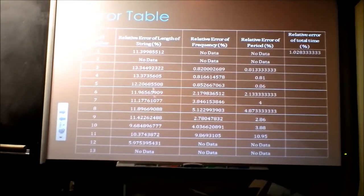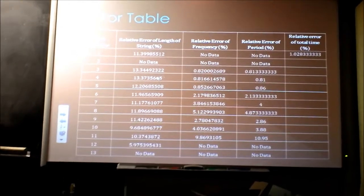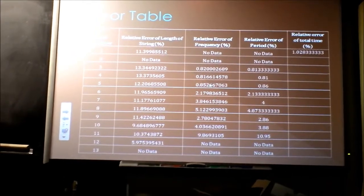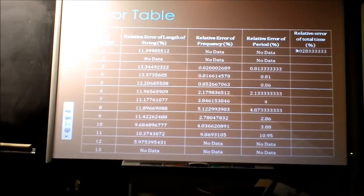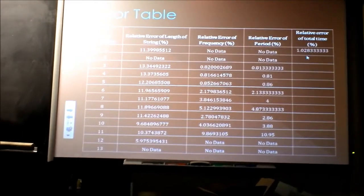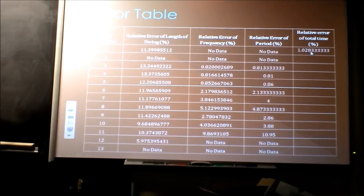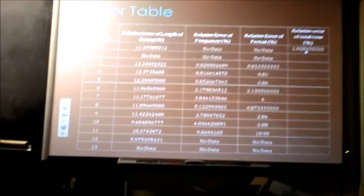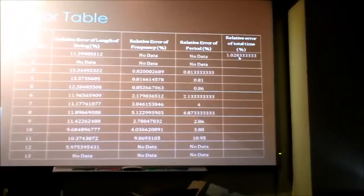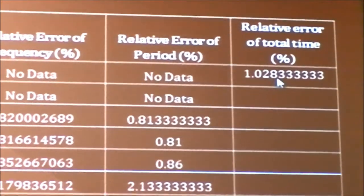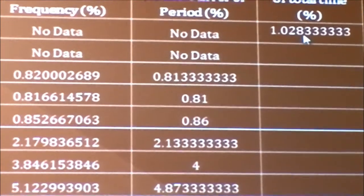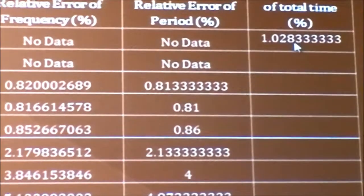Here's my error table where I just kind of analyze the string lengths and the different frequencies and the periods of the balls. And over here, I was particularly happy with this. This is the total time it took to go through one of the sequences, and I managed to get it so that it's only 1% off of where it's supposed to be. I was pretty happy about that.